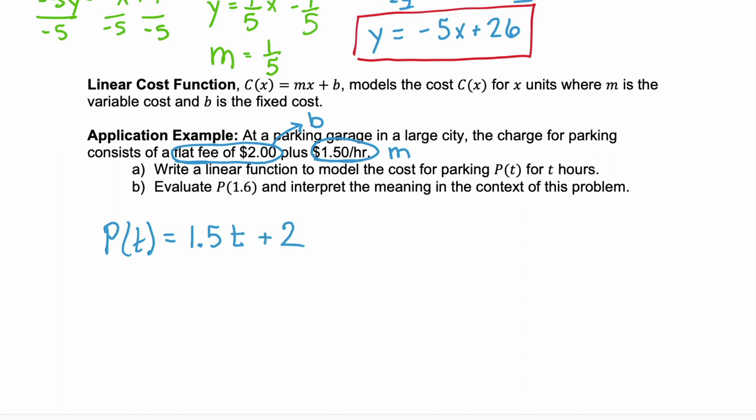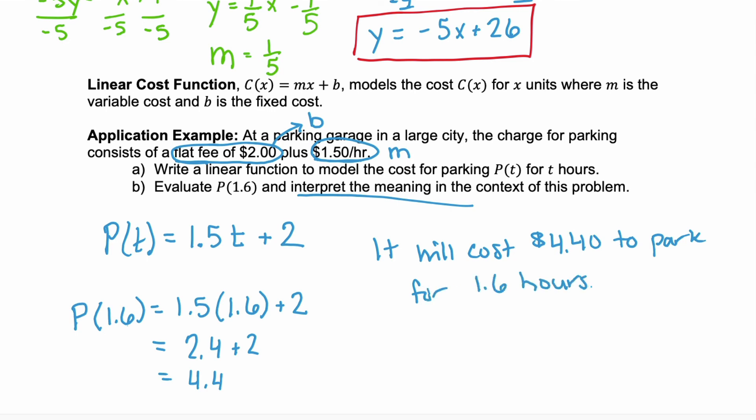And in part b, we want to evaluate p of 1.6, which says 1.5 times 1.6 plus 2. And that's 2.4 plus 2, or 4.4. Well, now we need to interpret the meaning of b. So what is 1.6 and what is 4.4? 4.4 is the cost. So it will cost $4.40 to park for 1.6 hours. Right? T was the number of hours that we evaluated it for, 1.6.